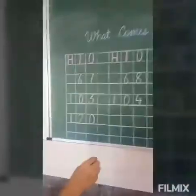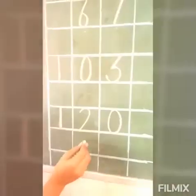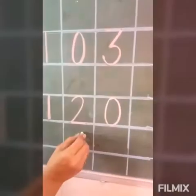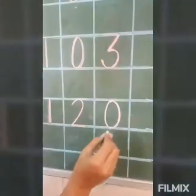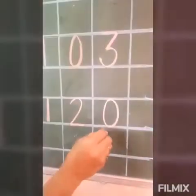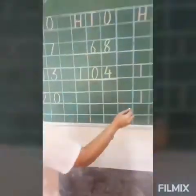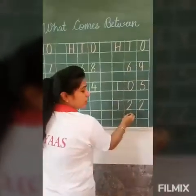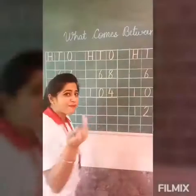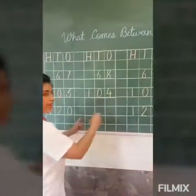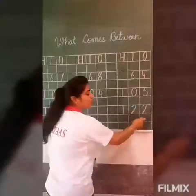So our next number is — read it out. What is this number? 120. And the second number is 122. So what will come in between 120 and 122?